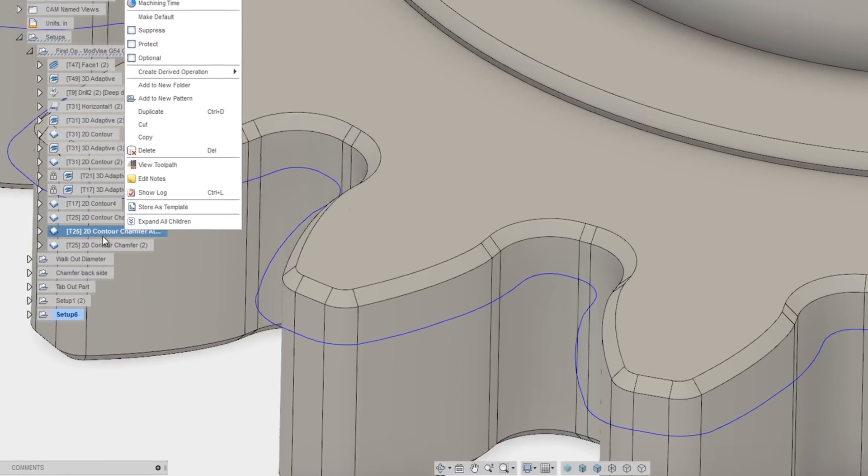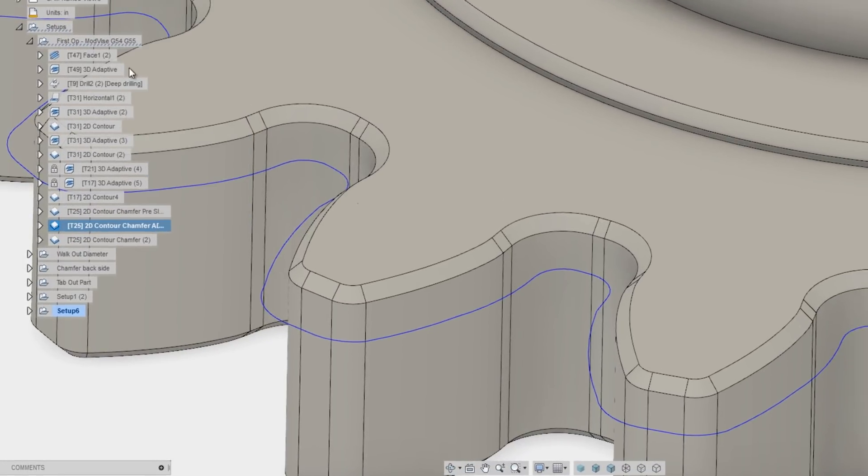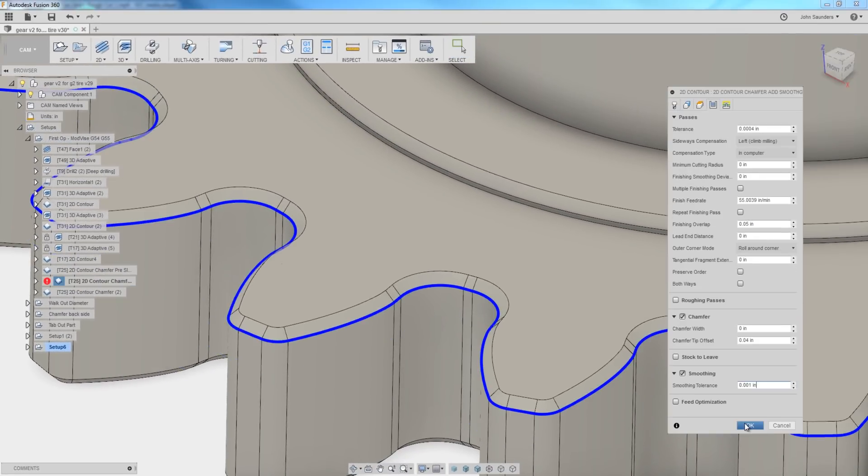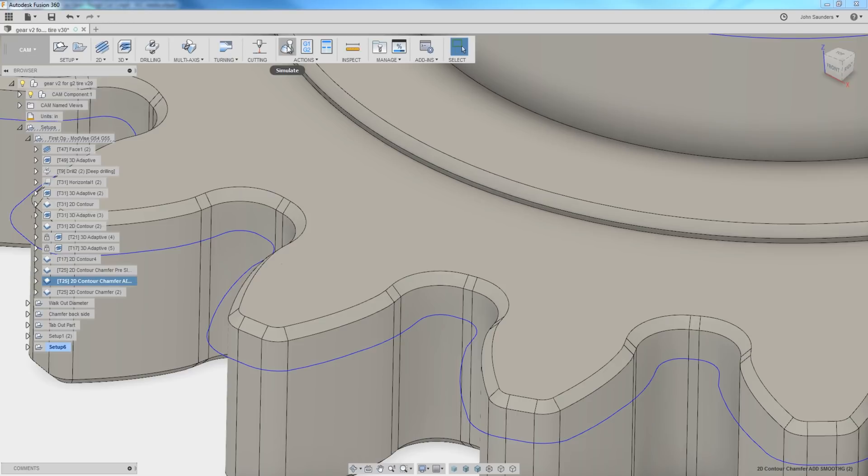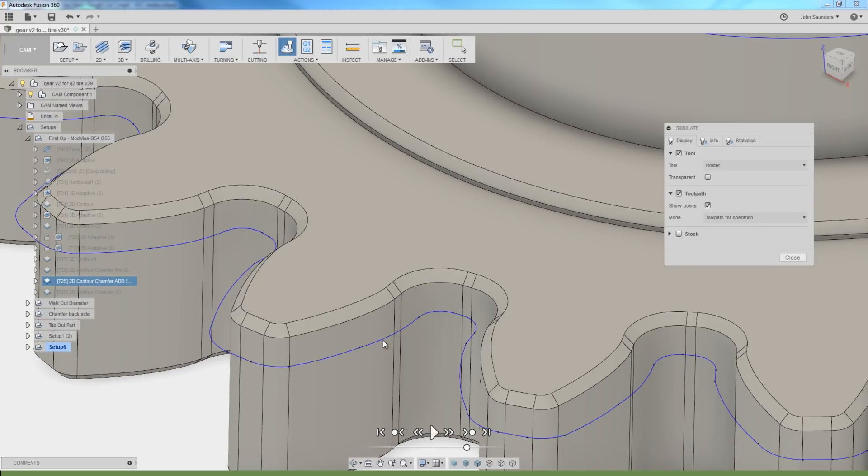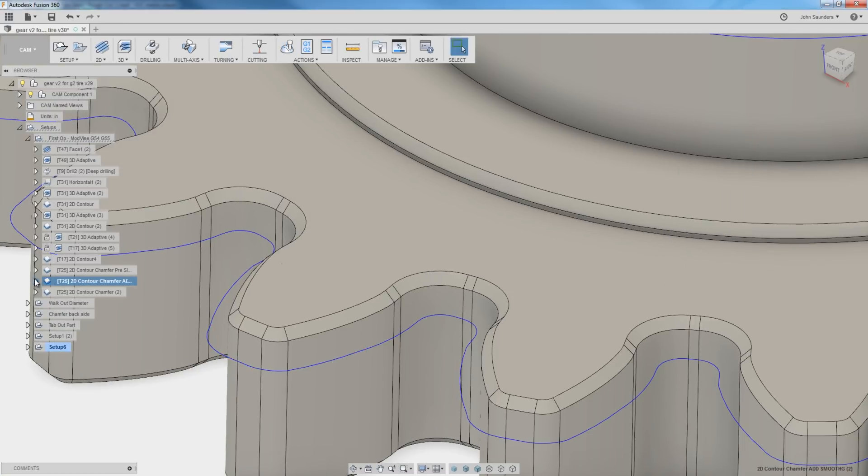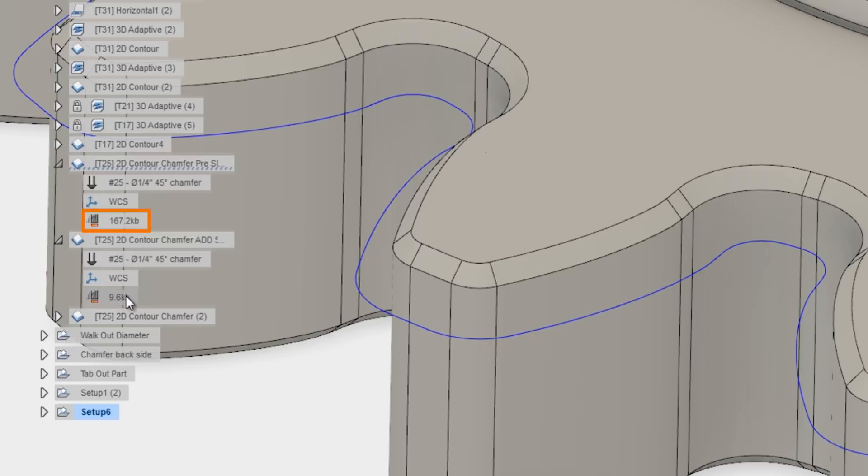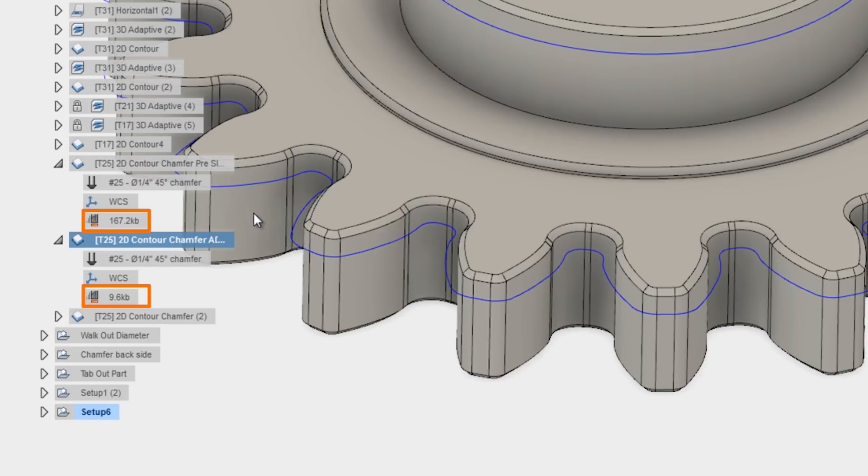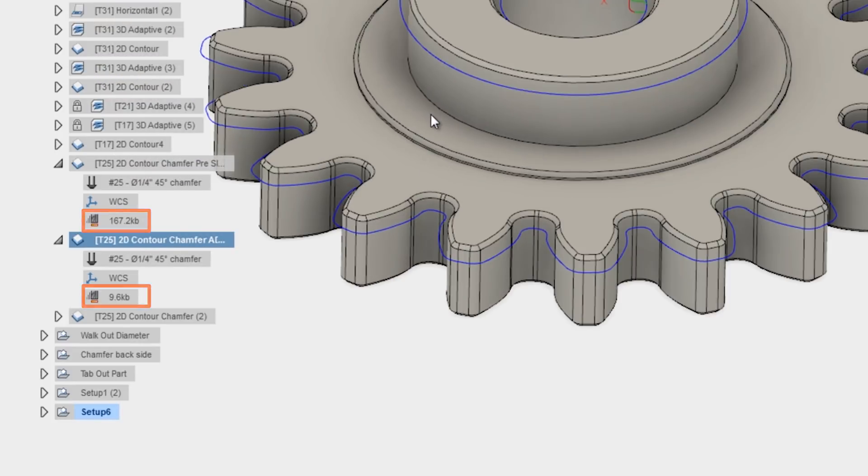So on the next one, I added smoothing. All I did was check a smoothing tolerance of 1,000th of an inch. Take a look at what is effectively the lines of code or number of points here. 1, 2, 3, 4, 5, 6 versus hundreds. And look at the size of the code. The first one was 167 kilobytes. This one is literally like 16 times smaller. What a low-hanging fruit type of improvement.